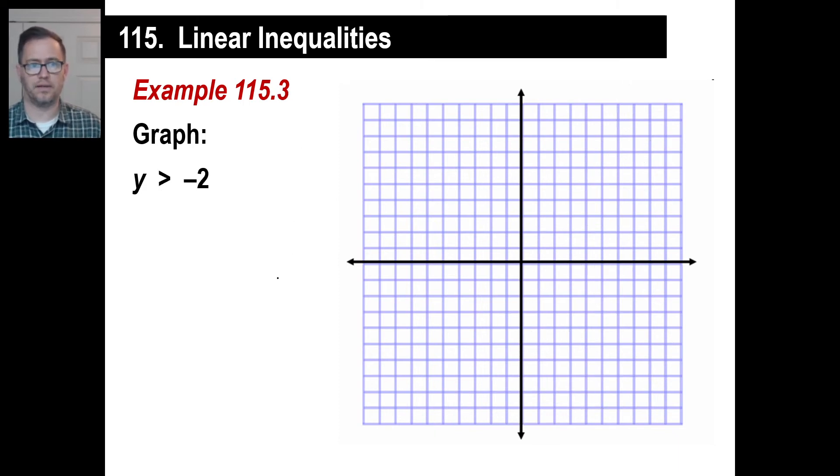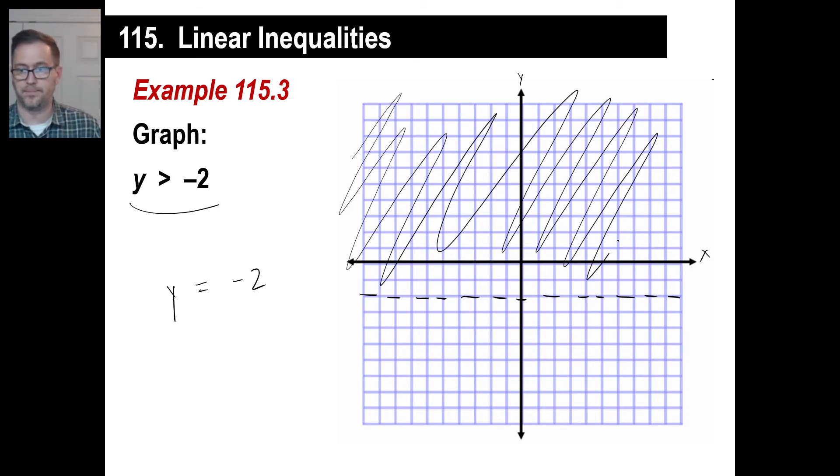Two more. These last two are a little bit odd. This we have y is greater than negative 2. If you remember, this is your x-axis, this is your y-axis. So the y value, if you just had this equation y is equal to negative 2, you would say my line is right here across here. It's at negative 2 of the y value. But you're asked for is y is greater than negative 2. So it means you're not going to include the actual line itself. You're going to use some dashes or dots or something like that. Then you're going to fill in everything greater than that. And there you go. And that's it.